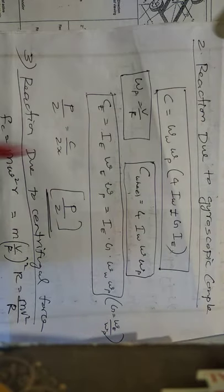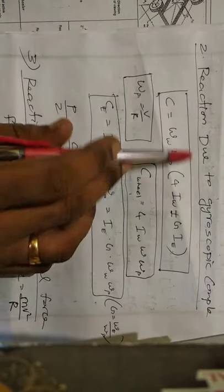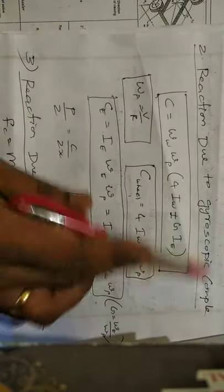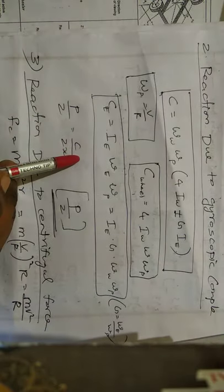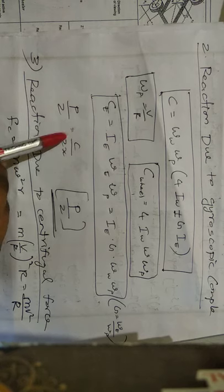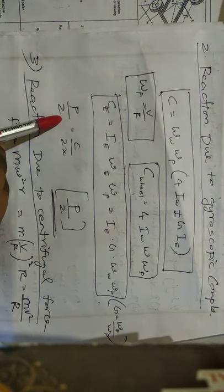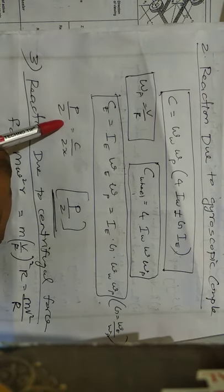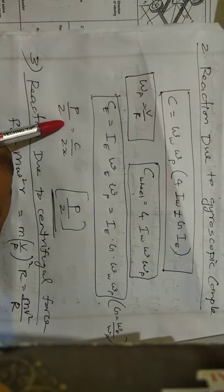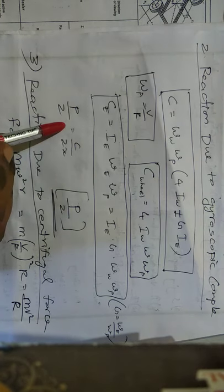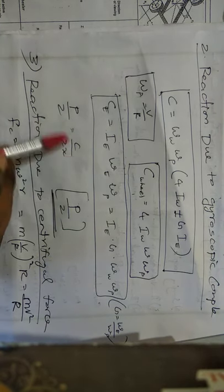The reaction due to the weight of the vehicle and the reaction due to the gyroscopic couple act in the same way. The force acting is P by 2. So the inner reaction equals the outer reaction. The outer reaction is P by 2.